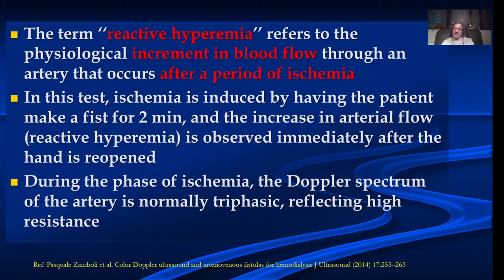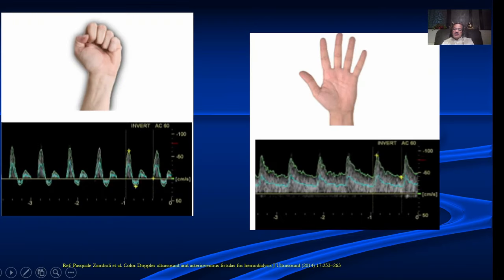There is a test known as reactive hyperemia, done typically before fistula planning. We are looking for an increment in blood flow after a period of ischemia. This test tells us whether the artery is able to dilate adequately after ischemia — important because once a fistula is created, increased blood demand requires the artery to cope. We ask the patient to hold the fist tight and evaluate the radial artery, seeing a very high resistance waveform, then ask the patient to release the fist — typically we then see an increase in diastolic flow, indicating the artery is good for dialysis.